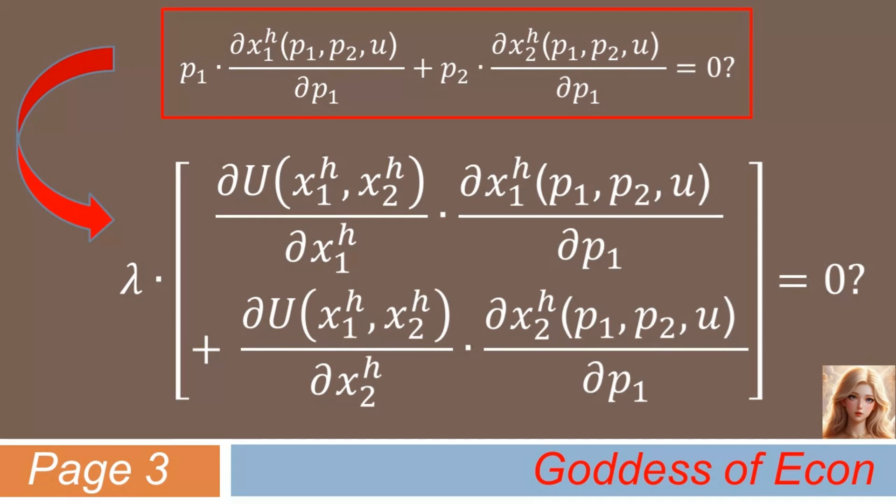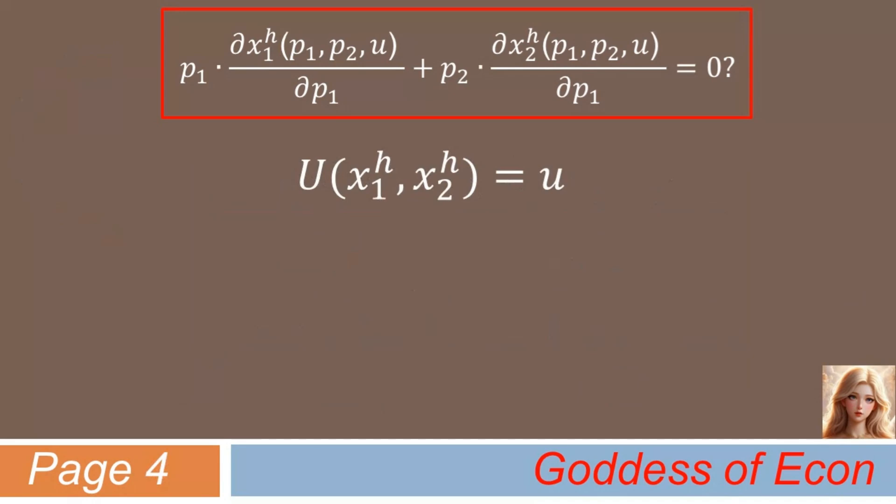Now, what do we have left? Well, we still haven't used the very last FOC, have we? The very last FOC was simply the constraint of the minimization problem for the purpose of holding utility at a fixed level. Let's differentiate this equation with respect to P1.